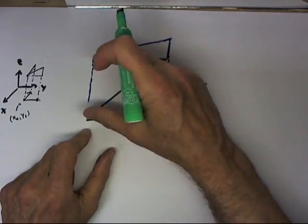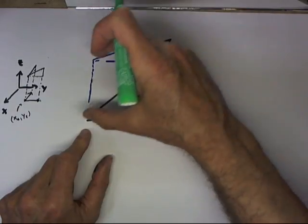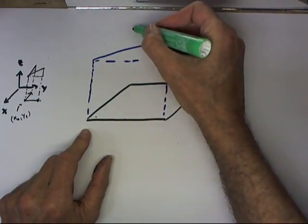And the slope of this line with respect to this direction is whatever the y derivative is. Similarly, in the x direction, if we had the same z value at this point as we do at this point, we would end up about here.